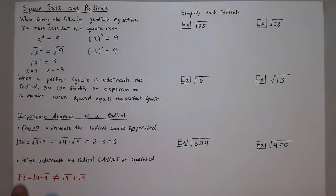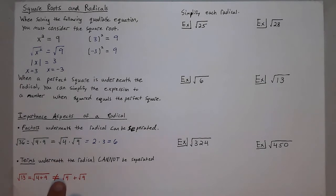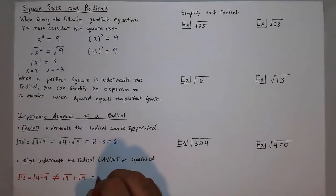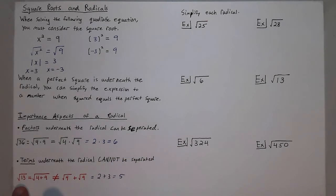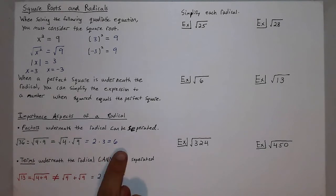The square root of 13 is not a perfect square. Also, if there are terms added underneath the radical they cannot be separated — the square root of (4 + 9) cannot be split into square root of 4 plus square root of 9, because that would give 2 + 3 = 5, and the square root of 13 is certainly not 5. You can only split factors, not terms.